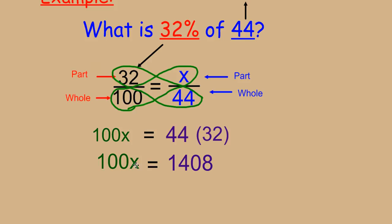Next, we want to get x by itself. We want to isolate the variable. In order to find out what 1x is, and we have 100x, we need to divide by this number or do the inverse operation. The inverse of multiplication is division.